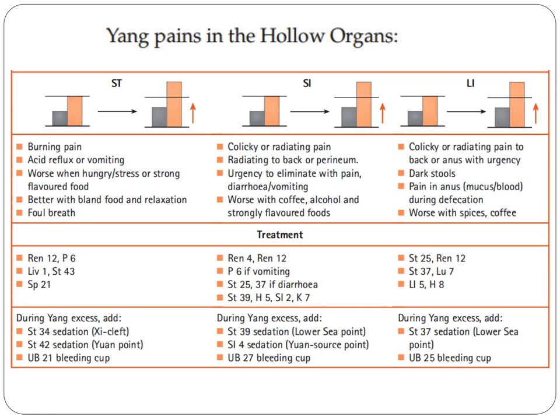Next is the small intestine. The explanation follows the same pattern as the stomach. In small intestine imbalances, signs and symptoms are colicky or gripping pain, tenesmus or rectal urgency, urgency to eliminate with pain, diarrhea, vomiting, and worse with coffee, alcohol, and strongly flavored foods.